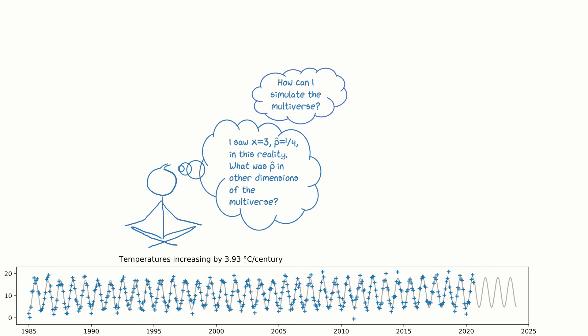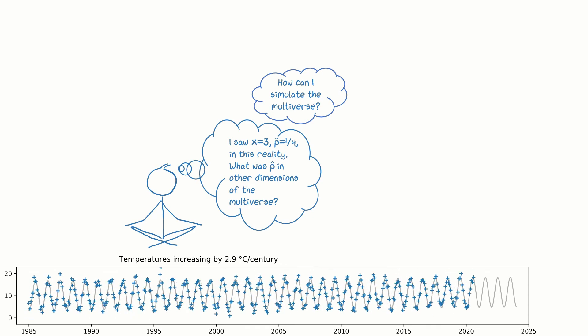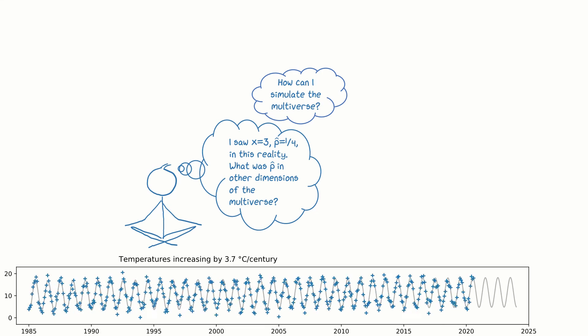For each different simulated data set, we'll get a different readout for the quantity we're interested in. In this case, the rate of temperature increase. We'll look at the spread and take that to measure how confident we should be in our answer.